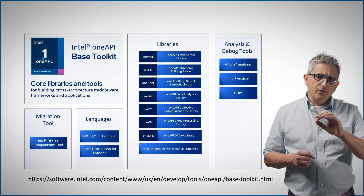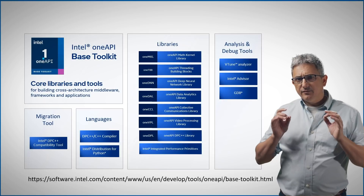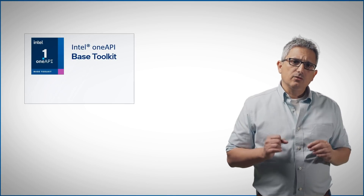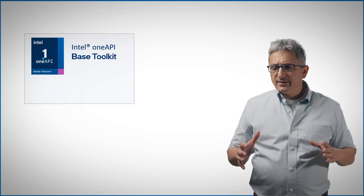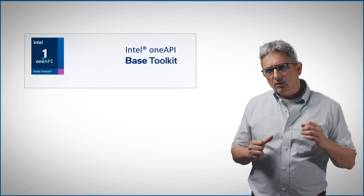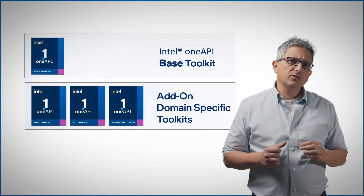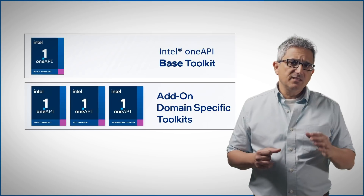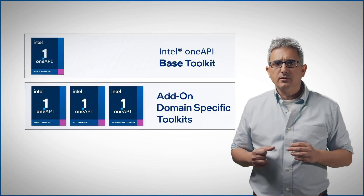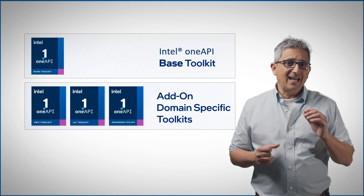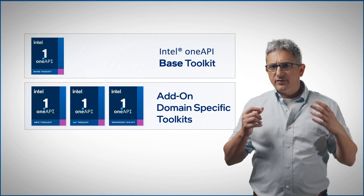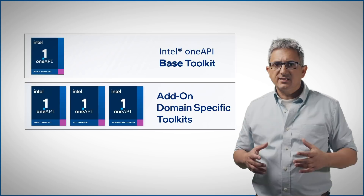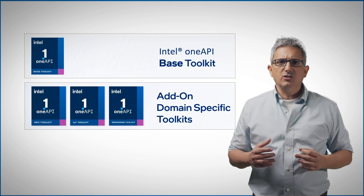We will review all the components in a dedicated video — look for it. The base toolkit is a foundational toolkit with the core libraries and capabilities. But you can also find domain-specific toolkits targeted at different domains, such as the HPC toolkit for high performance computing and the Intel OneAPI IoT toolkit for deploying at the edge with power-efficient performance.